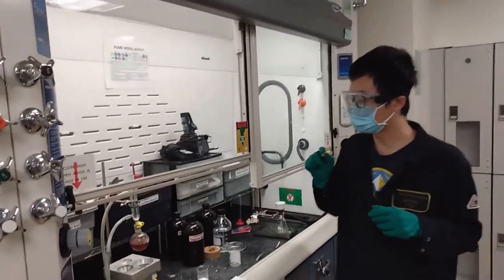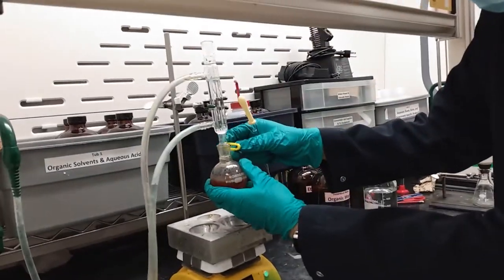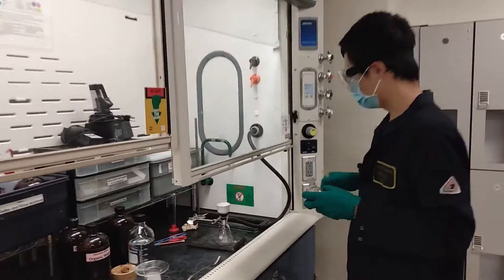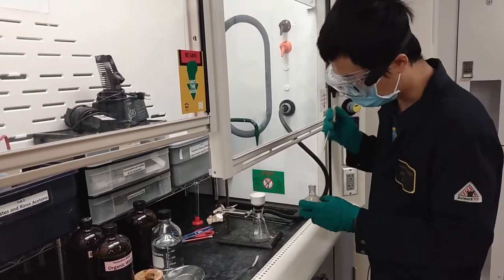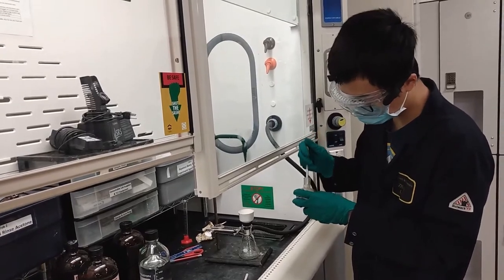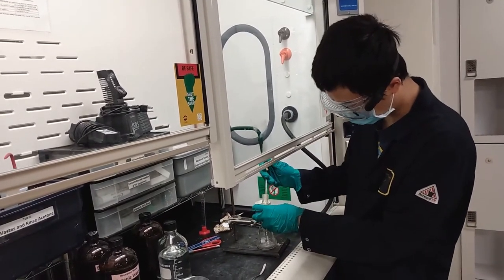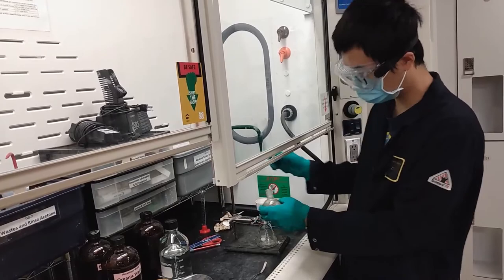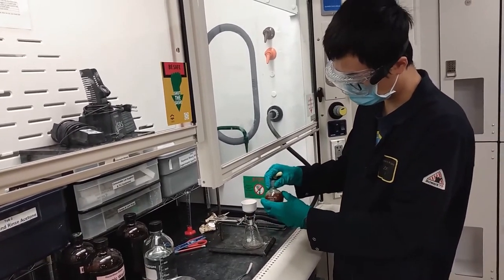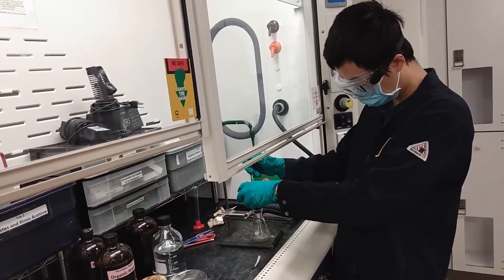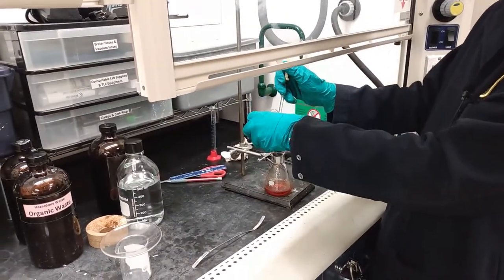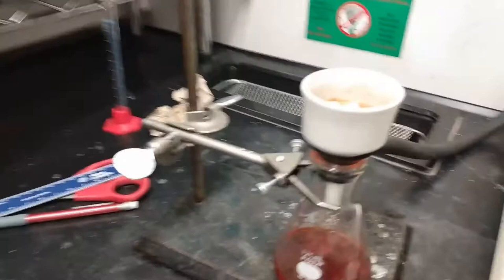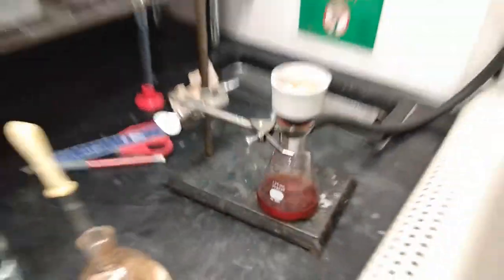All right, so now the refluxing is done and it's cooled to room temperature, so I can take it off and do vacuum filtration. This is the vacuum filtration setup. I've already put the filter paper in the Buchner funnel. Wet the filter paper a little bit before pouring it in. Shake it a little bit and pour it in gently. Now there's no more liquid dripping off from the bottom, so it's done.